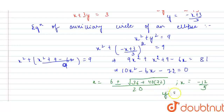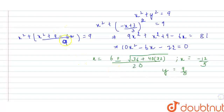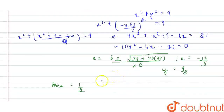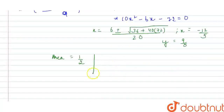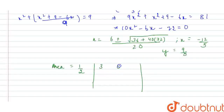Substituting x = −12/5 back gives y = 9/5. So the coordinates of M are (−12/5, 9/5). Now we have to find the area of triangle AMO. Using the determinant method, area = ½ × |determinant| with vertices A = (3, 0), M = (−12/5, 9/5), and O = (0, 0), each with a third coordinate of 1.